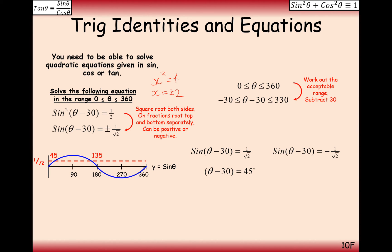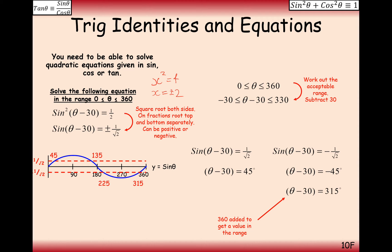For the negative equation, sin⁻¹(−1/√2) = −45°, which is outside the domain, so we add 360° to get 315°. Using symmetry on the curve we get 225°. So (θ − 30) = 45°, 135°, 225°, 315°. Adding 30° to each gives the final four values of θ.